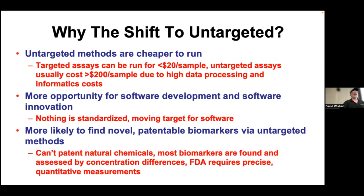People usually say that untargeted is cheaper, but targeted assays can be run for as little as $20 a sample. Untargeted methods at a core facility often cost more than $200—sometimes $300 per sample—because of high data processing and informatics costs. In the world of untargeted, there's more opportunity for software development and innovation, but if none of it's standardized, you're writing software for an audience of two, because everyone has a different method. So yes, you can publish a lot of software, but these things aren't getting used or cited because it's just for your lab and your friend.